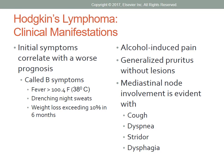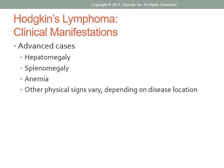Generalized pruritus without skin lesions may develop. Cough, dyspnea, stridor, and dysphagia may all reflect mediastinal node involvement. In more advanced disease, there may be hepatomegaly and splenomegaly. Anemia results from increased destruction and decreased production of erythrocytes. Other physical signs vary depending on where the disease is located. For example, intrathoracic involvement may lead to superior vena cava syndrome; enlarged retroperitoneal nodes may cause palpable abdominal masses or interfere with renal function. Jaundice may occur from liver involvement, and bone pain may occur as a result of bone involvement.